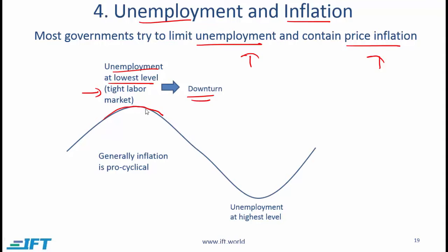When the labor market is tight, the bargaining power of labor increases, so labor demands higher wages. Wages represent a major cost for businesses. When wages are up, the short-run aggregate supply curve will shift to the left, reducing real GDP. A reduction in real GDP means the economic cycle starts coming downwards.